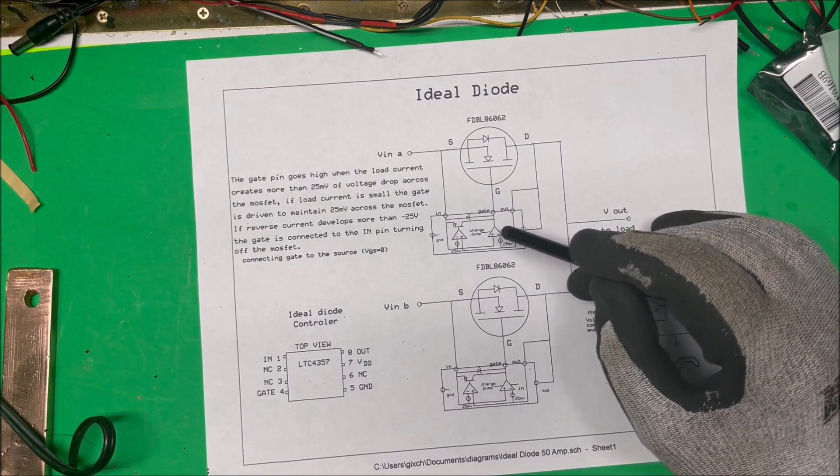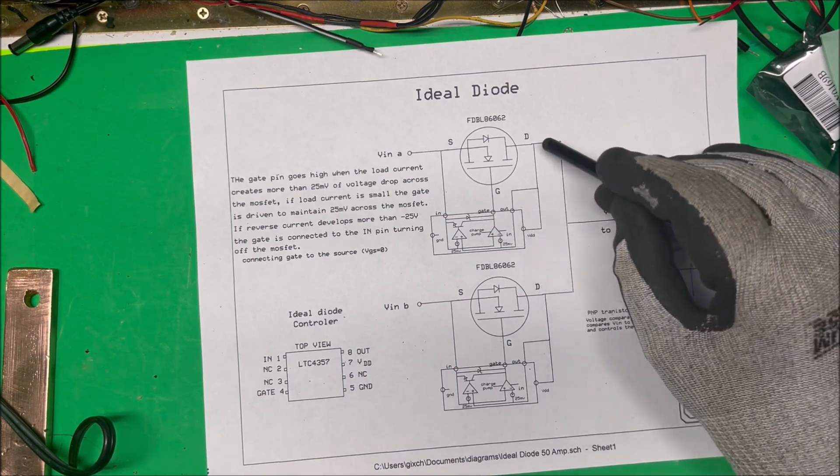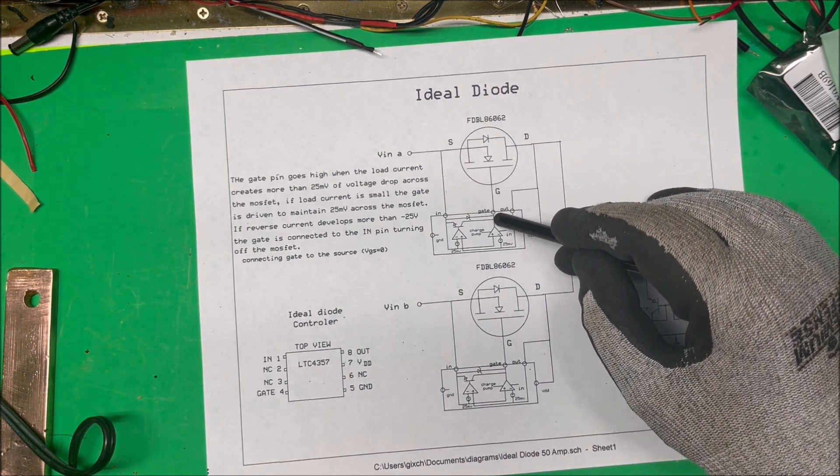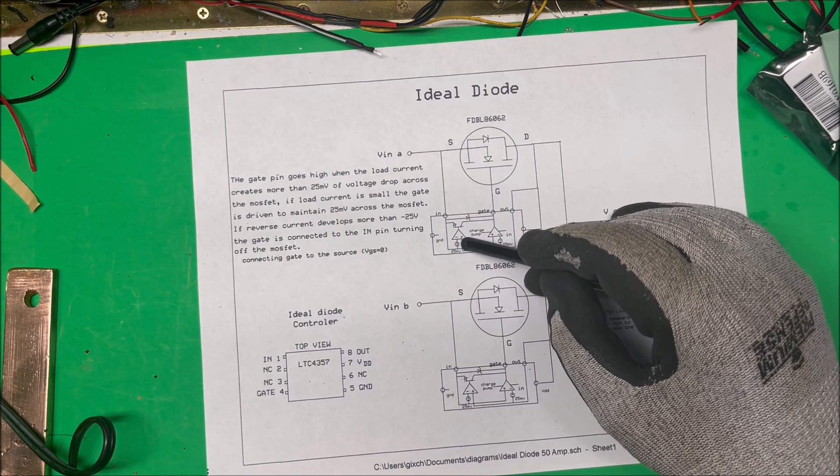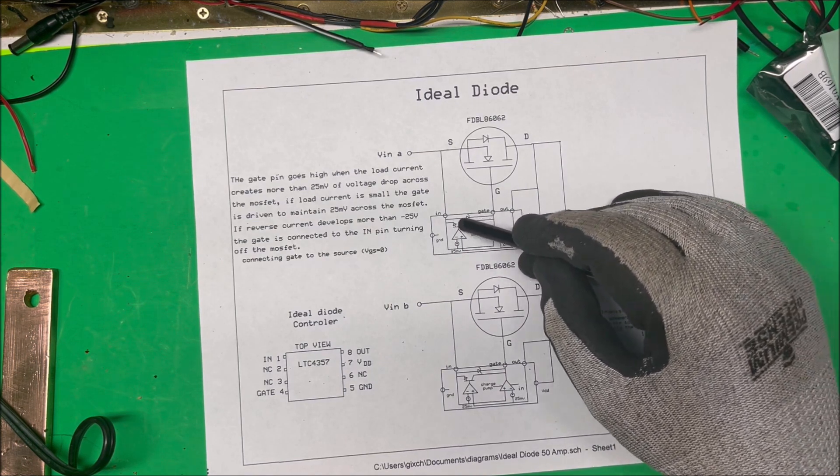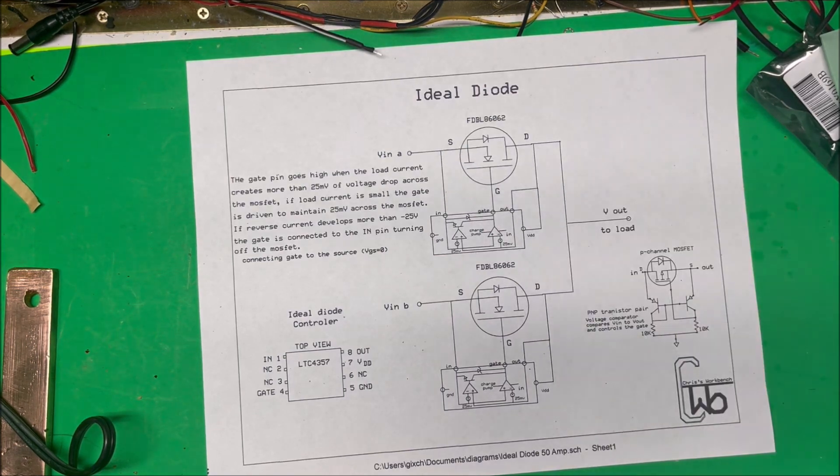They have a couple voltage comparators inside the chip here. When they see this voltage over here is higher than this voltage, they turn this comparator on and it activates this little transistor in there, and so it ties the gate to the source here and drains it off. That works good.